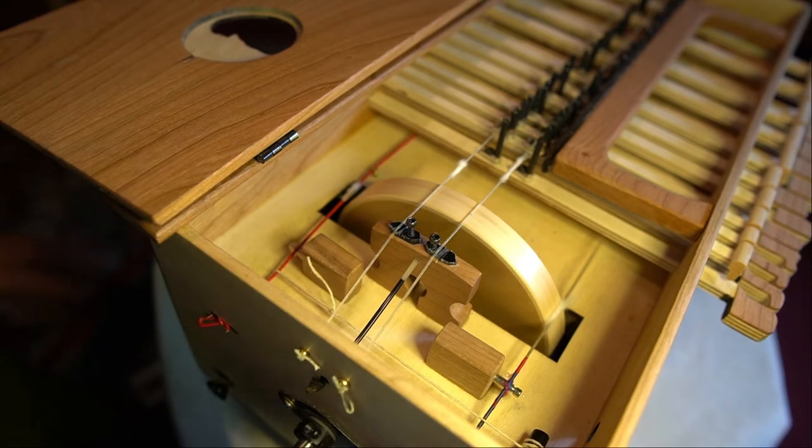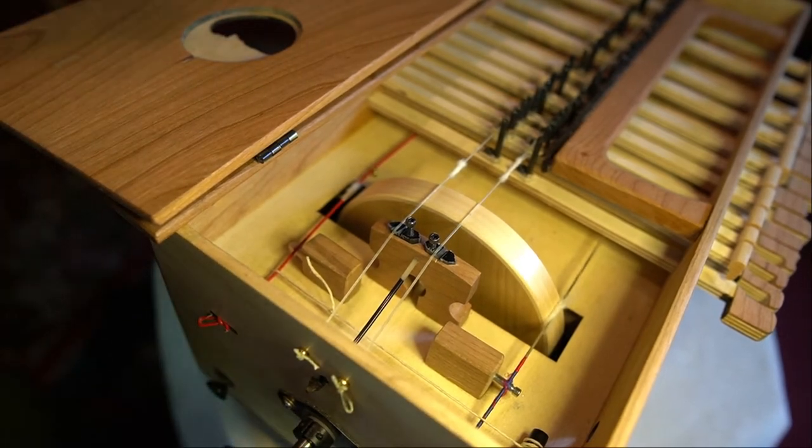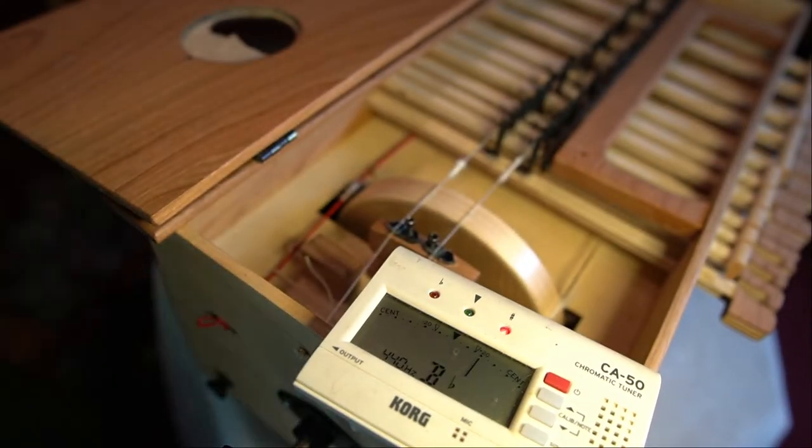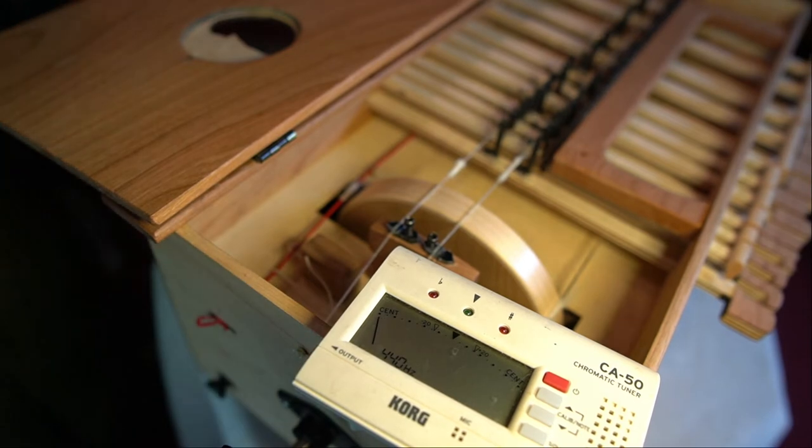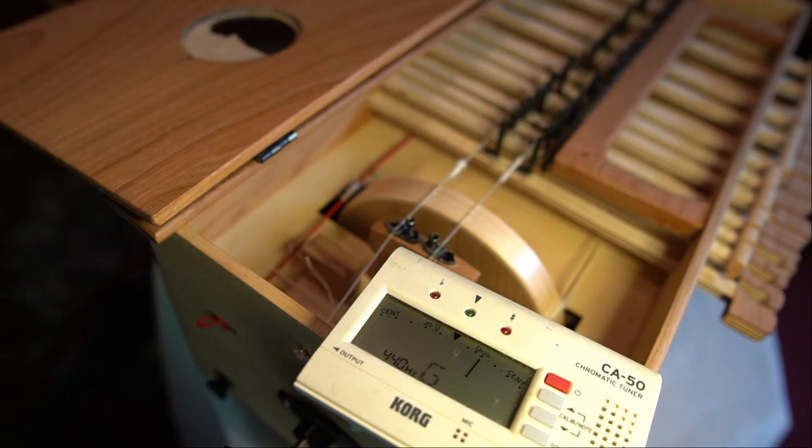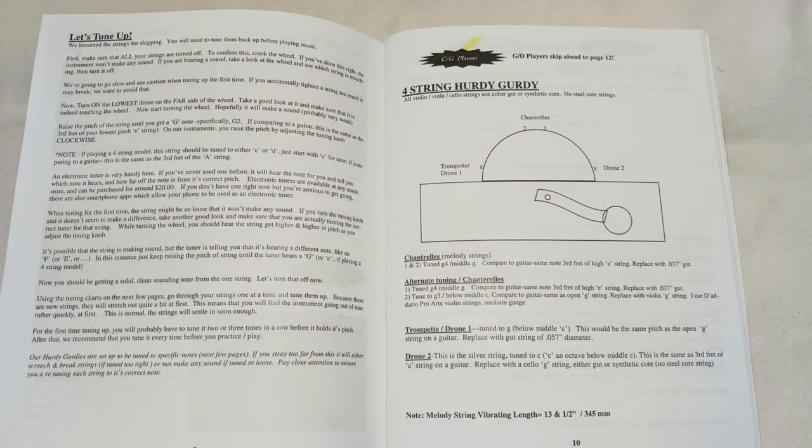Now we're getting a note. We need to tune it. I've got my electronic tuner here. This string is tuned normally to a C note if you're in the GC tuning, which is our most common one that we ship in. If you are not sure, the tuning charts for these instruments are on page 10 and page 12 of your instruction book, depending on which tuning you are set up in. Page 10 for GC, page 12 for DG tuning.